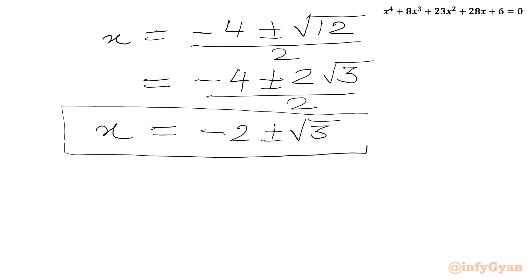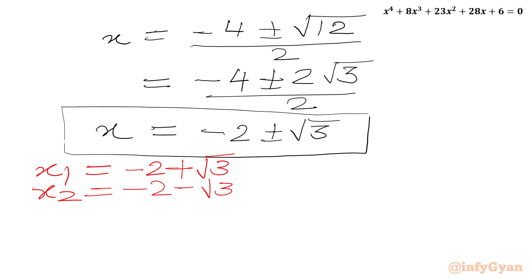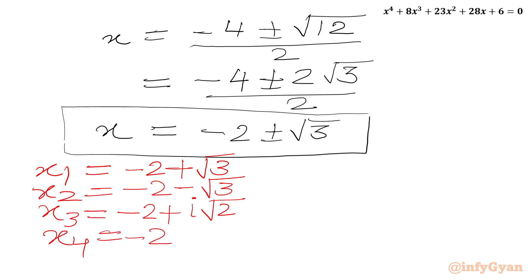So here we have two real and two complex solutions. x1 equal to minus 2 plus root 3, x2 equal to minus 2 minus root 3, x3 equal to minus 2 plus i root 2, and x4 equal to minus 2 minus i times root 2.